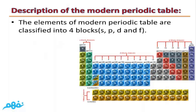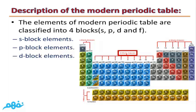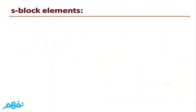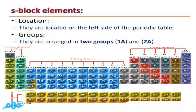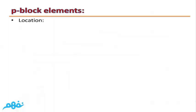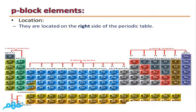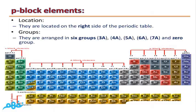The elements of the modern periodic table are classified into four blocks: s block, p block, d block, and f block elements. S block elements are located on the left-hand side of the modern periodic table and contain two groups: group 1A and 2A. P block elements are located on the right-hand side and are arranged in six groups: 3A, 4A, 5A, 6A, 7A, and finally group zero, which contains noble or inert gases.